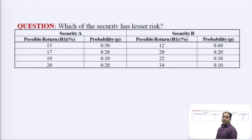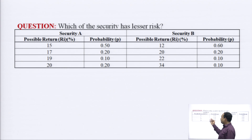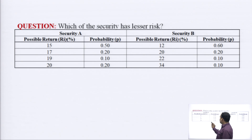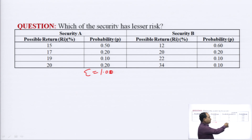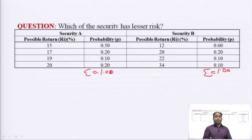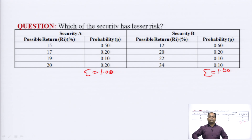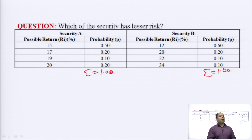Security A has a return profile of 15, 17, 19, and 20 percent, whereas the probability of their respective returns is 0.5, 0.2, 0.1, and 0.2. The total of these probabilities is 1. Same for Security B — there are various possible returns and their probabilities, the total is also 1. We have to compare two securities and determine in which security an investor feels lesser risk and in which more risk, and make an investment decision accordingly based on the risk profile attached to each security.